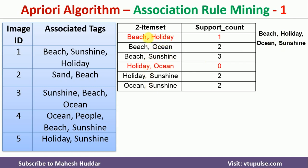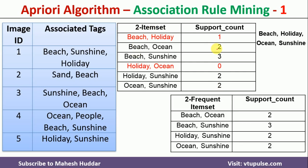Now we count the support count for each 2-itemset. Beach-holiday appears only once. Beach-ocean appears two times. Beach-sunshine appears three times. Similarly, we count all combinations. The minimum support count expected is still 2, so 2-itemsets with support count of 2 or more are the 2-frequent itemsets. In this case, beach-ocean, beach-sunshine, holiday-sunshine, and ocean-sunshine are the 2-frequent itemsets.